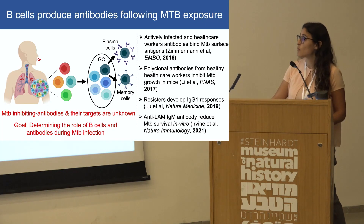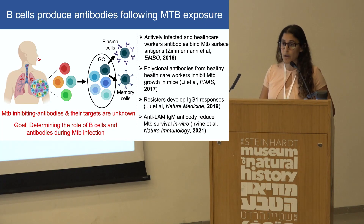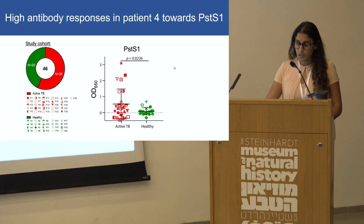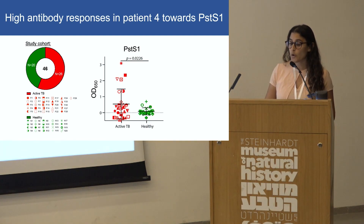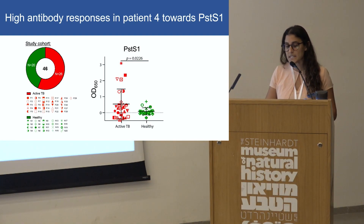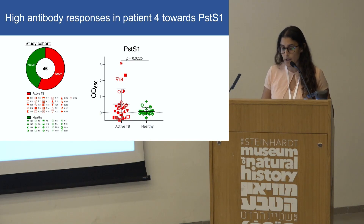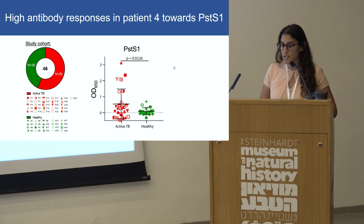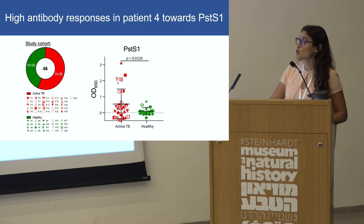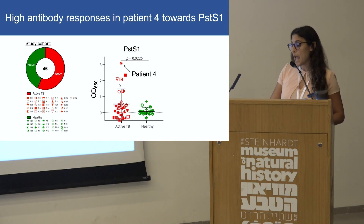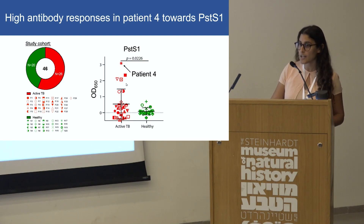For that reason, we aimed to understand the role of B cells and antibodies during mycobacterium infection. To identify the targets for antibodies developed during TB infection, we recruited a cohort of 26 active Israeli patients in red and 20 healthy individuals in green. We measured the sera antibody responses in ELISA towards several TB proteins. We found one protein, PSTS1, a phosphatransporter that binds sera antibodies, with some patients showing a very strong response, so we chose to focus on these antigens, specifically on patient 4 with the highest serological response.